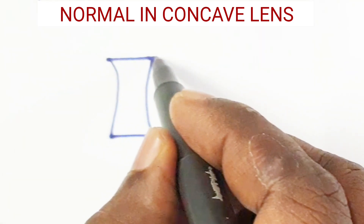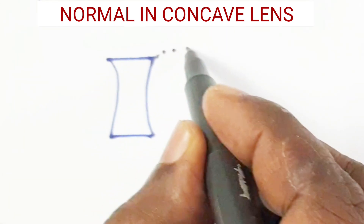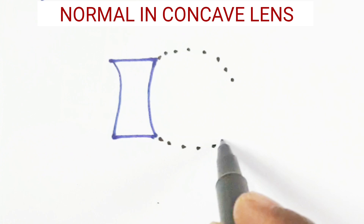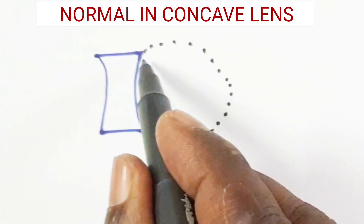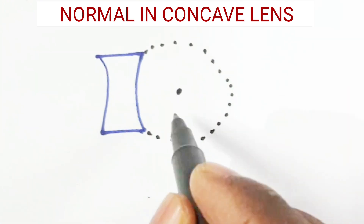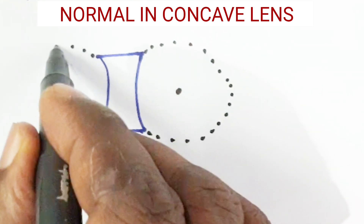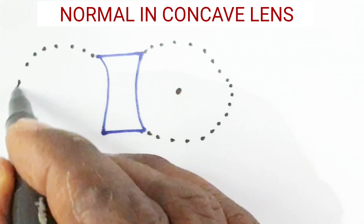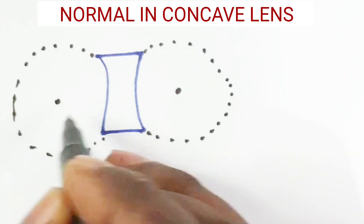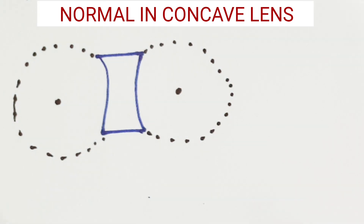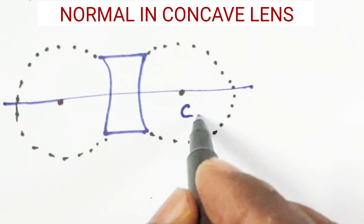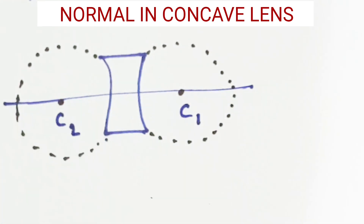Let me fill the sphere. This is the curved surface having a sphere. These two are the centers of curvatures. Let me draw the principal axis. This is C1 and this is C2.